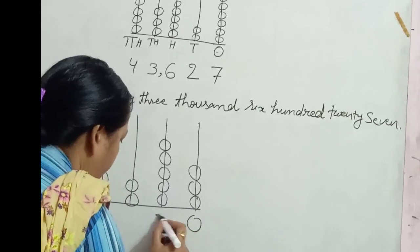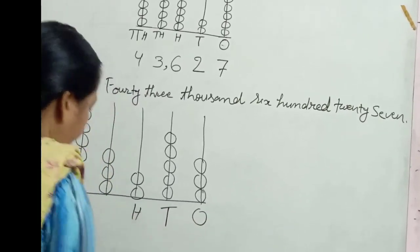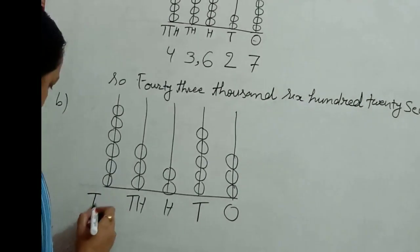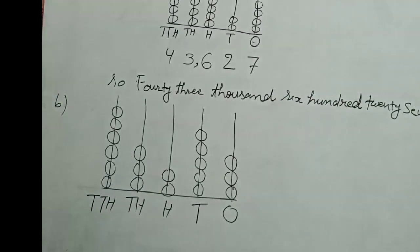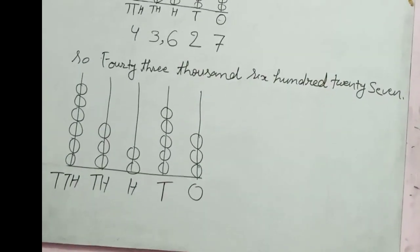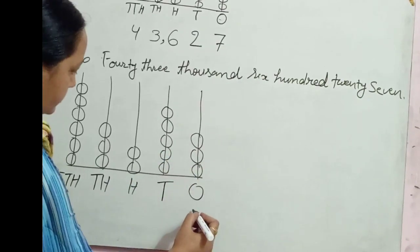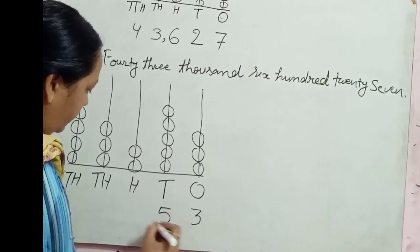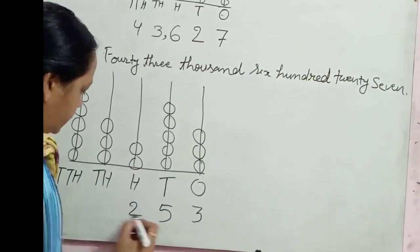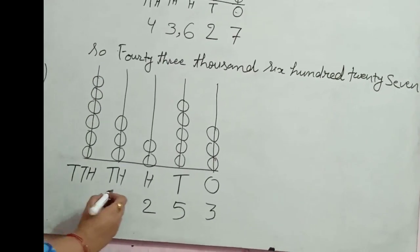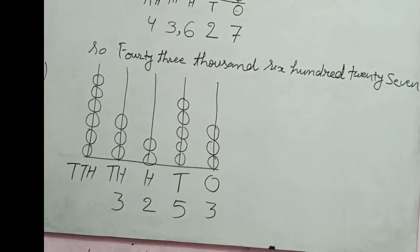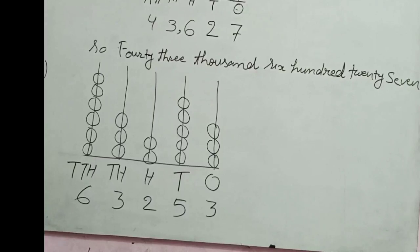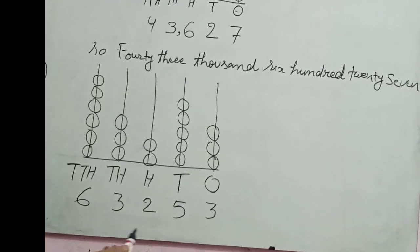That is 1, 10, 100, 1000, 10,000. According to the pearls, 3 pearls here, so write 3. Here 5 pearls, so write 5. 2 at the hundreds place, 3 pearls at the thousands place, and 6 pearls at the ten thousands place. Insert the comma according to the Indian numeration system.